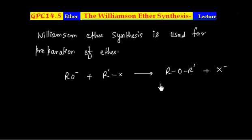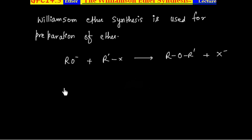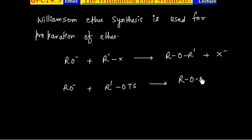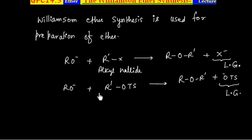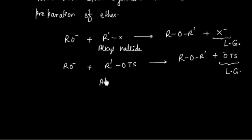X⁻ leaves as the leaving group. We can also use, in place of alkyl halide, an alkyl tosylate — it will also give ether. OTs⁻ will be released as a good leaving group. So we can either use alkyl halide or alkyl tosylate.